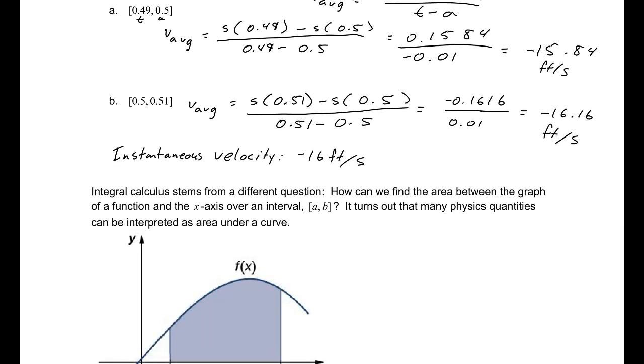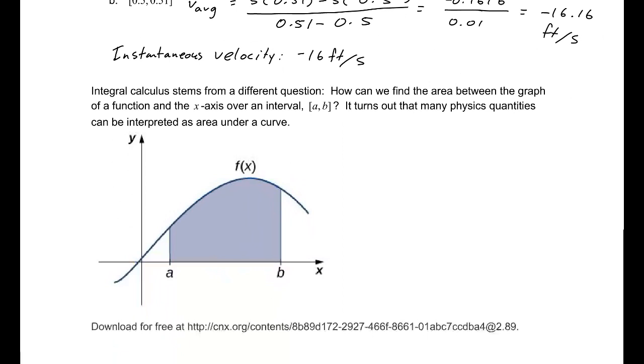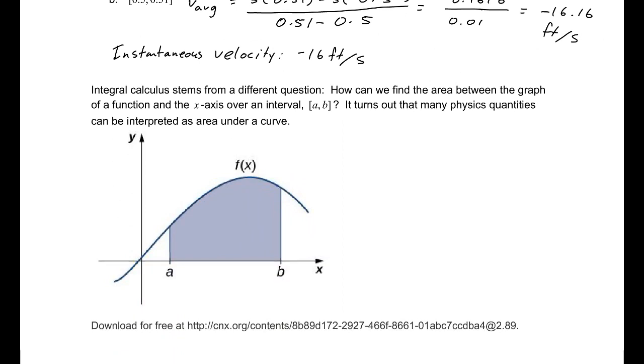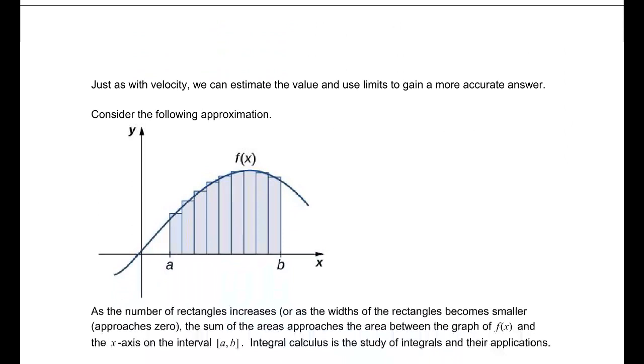The second branch of calculus is integral calculus, and it stems from a slightly different question. Actually, it's more than slightly, it's a very different question. How can we find the area between the graph of a function and the x-axis over an interval [a, b]? It turns out that a lot of physics quantities can be interpreted as area under a curve. In fact, we can think of derivatives and limits in this same context. Just as with velocity, we can estimate the value and then use limits to gain a more accurate answer. Let's begin with this approximation.